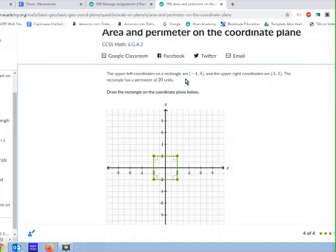It says the upper left coordinates of a rectangle are negative 4, 4. So I'm going to move this upper left to that position, negative 4, 4. The upper right are positive 4, 4. So I'm going to click on the point and just drag it and then release.